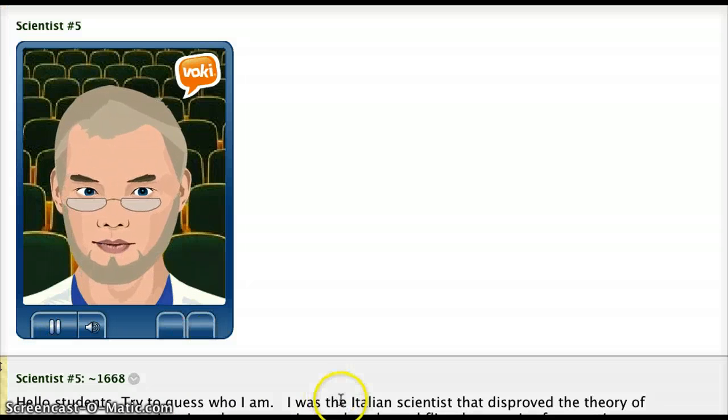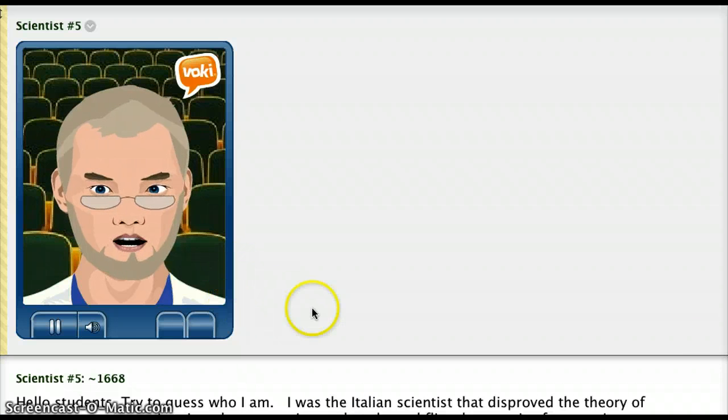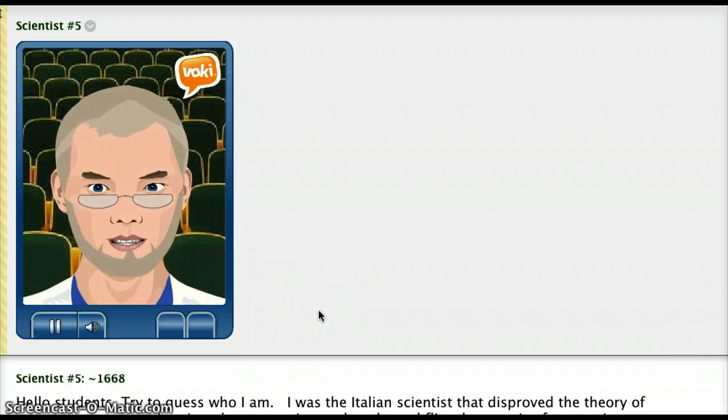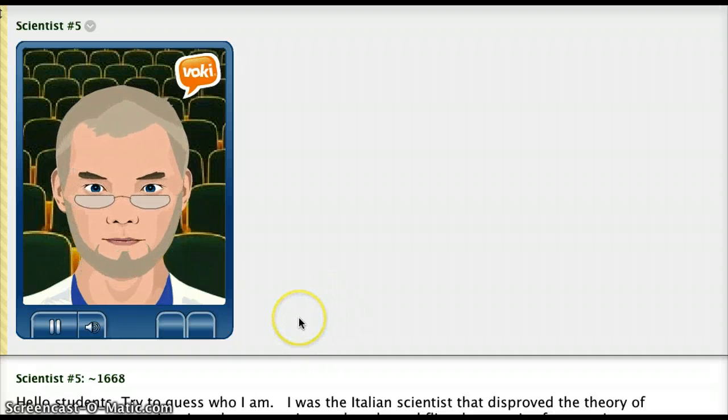Hello students. Try to guess who I am. I was the Italian scientist that disproved the theory of spontaneous generation. I made an experiment that showed flies only come from rotting meat when exposed. Who am I?